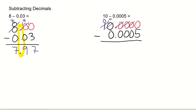Then I'm going to borrow from this 10, make that a 9, and carry over 1 to make that 0 a 10. I'm going to borrow a 1 from this one to make that 10 — that reduces to 9. Then borrow again: make that 9, bring the 1 over, borrow again, reduce that to 9, and make that a 10. Now I can do my subtraction: 10 minus 5 is 5, 9 minus 0 is 9, 9 minus 0 is 9, 9 minus 0 is 9. Keep my decimals in alignment. 9 minus 0 is 9. So my final answer is 9.9995.